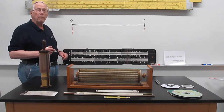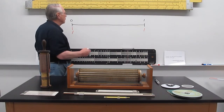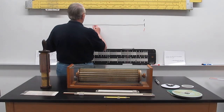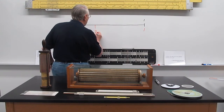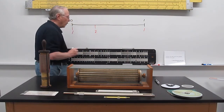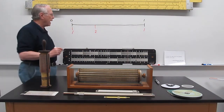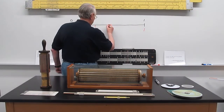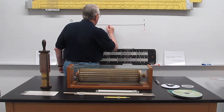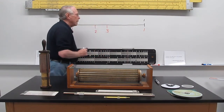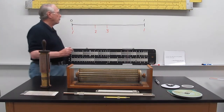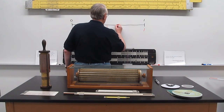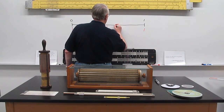The logarithm of 2 is about 0.3. The logarithm of 3 is just a hair less than one half. The logarithm of 4 would be about 0.6, so that would be about right here.